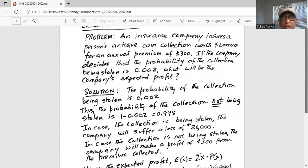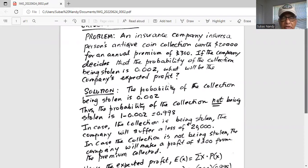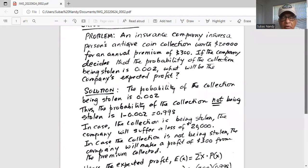The probability of the collection being stolen is 0.002. Thus, the probability of the collection not being stolen is 1 minus 0.002 or 0.998.